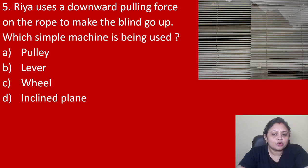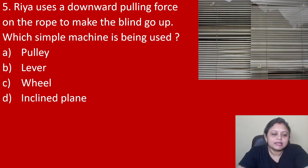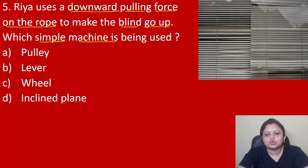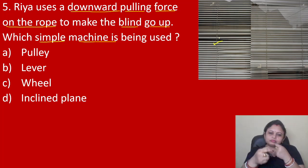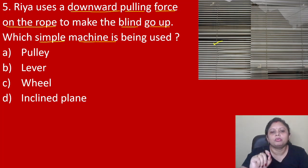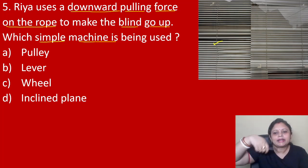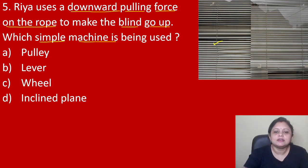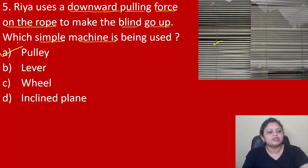Rhea uses a downward pulling force on the rope to make the blind go up. Which simple machine is being used? Option A pulley, B lever, C wheel, D inclined plane. When we pull the rope downward, the blind goes up. This change in direction means it is a type of pulley — when we pull the rope, it goes up, so it is working on the pulley principle. The correct answer is option A, pulley.